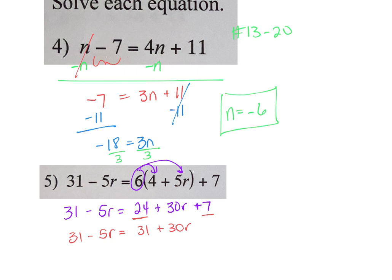This will give me 31 plus 30r. Move my numbers to one side, variables to the other. Those cancel. I get 31 minus 5r equals 31 plus 30r. People always question when they get zero as an answer, but zero is an actual number. If you get something like this, you're just not done solving. Zero is a number, it's a whole number. R equals zero.